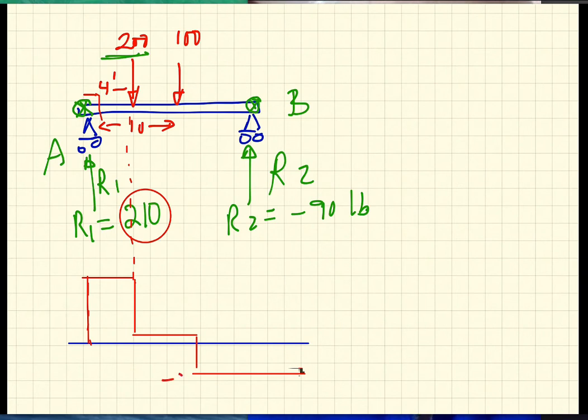So if you look at it in a diagrammatic way, then you will have you go up 210, and then you go down 200, and then you go down 100 at the concentrated load, and you go up again at the concentrated load with the value of the reaction of 90.